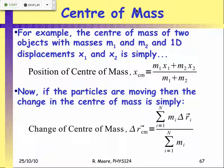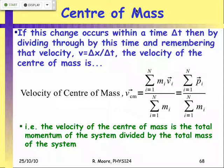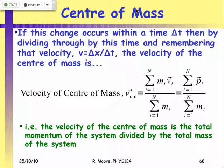We showed that the velocity of the center of mass equals the total momentum divided by the total mass. So if we have a system where the total momentum is constant and does not change, then the velocity of the center of mass also does not change.